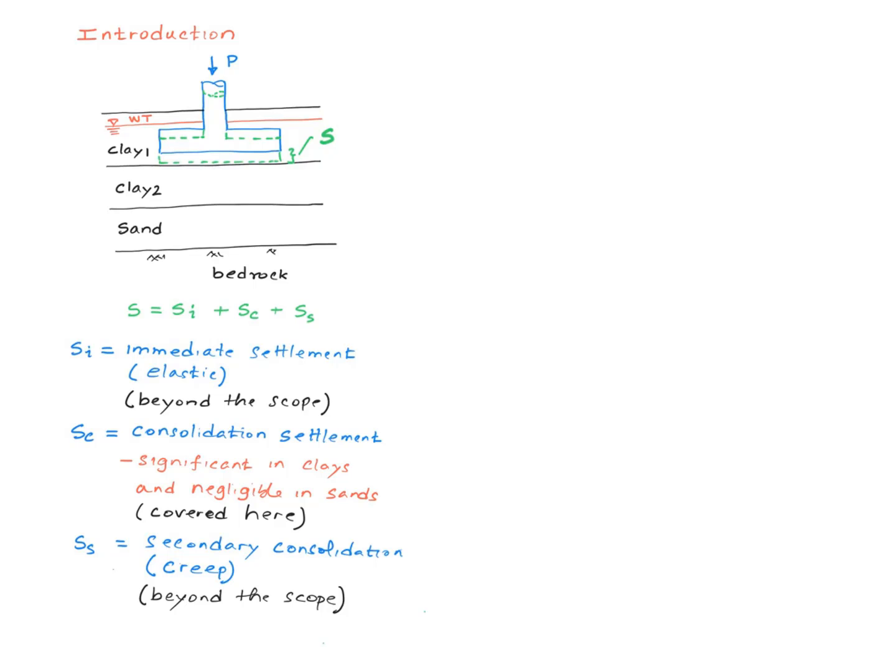Supposing I have a shallow footing that supports a column load of P. This footing is going to experience a settlement S. S basically comes from the compressibility of the soil layers below the footing up until the bedrock. In this example, we have a thin layer of clay 1, a layer of clay 2, and then the sand layer. All of these are going to contribute to S.